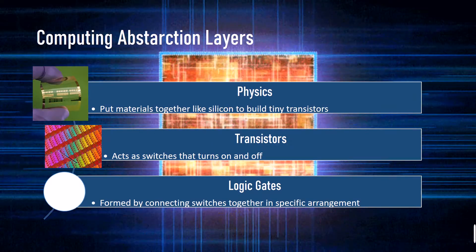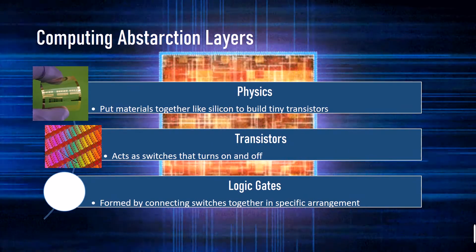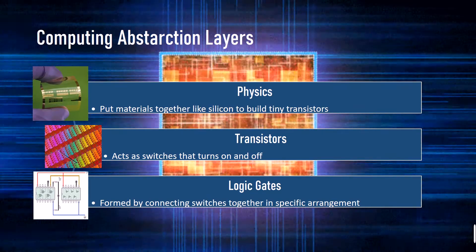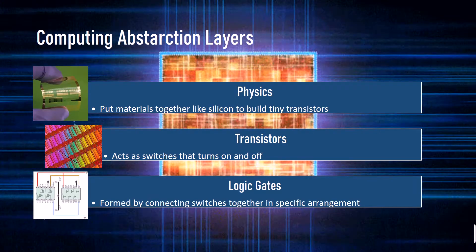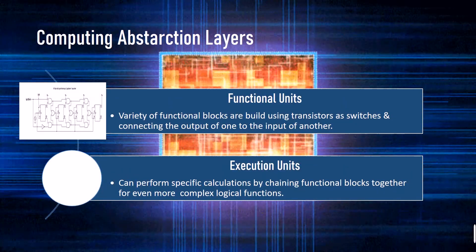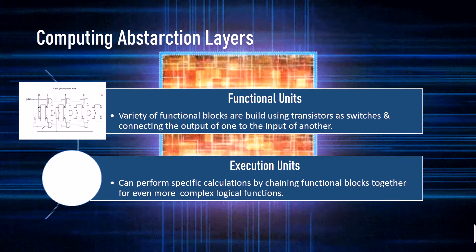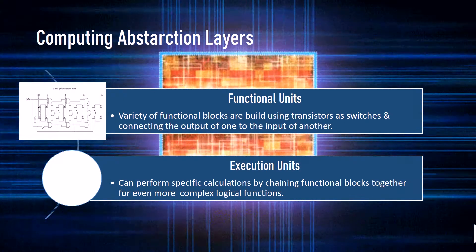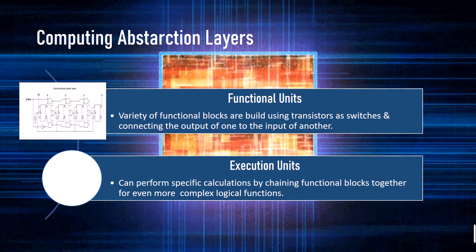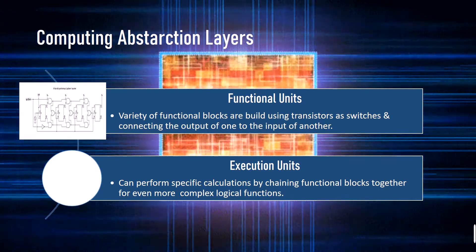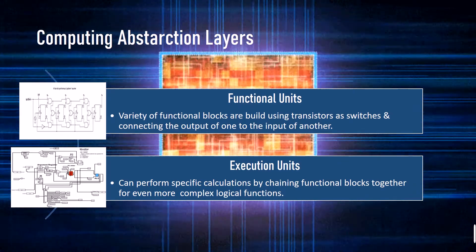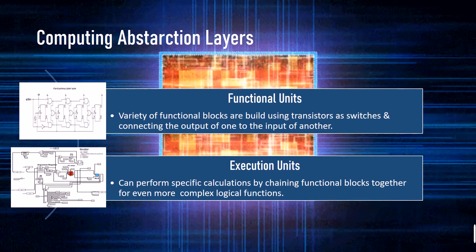The first part of the computing abstraction layers is physics, where materials are put together to build tiny transistors. These transistors act as switches that turn on and off. By connecting the switches in specific arrangements, it forms logic gates. Using transistors as switches and connecting the output of one to the input of another, a variety of logic circuits or functional blocks are built.